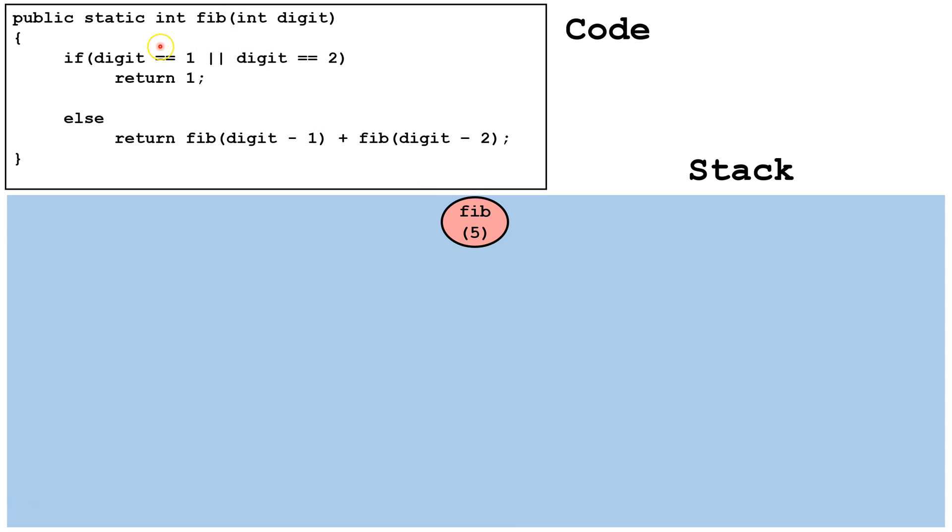This is not the base case, because digit does not equal 1 or 2. So we're going to make two calls to the same method. We're going to call Fib digit minus 1, which is 4, and then digit minus 2, which is 3. So we branch it off into two separate calls.